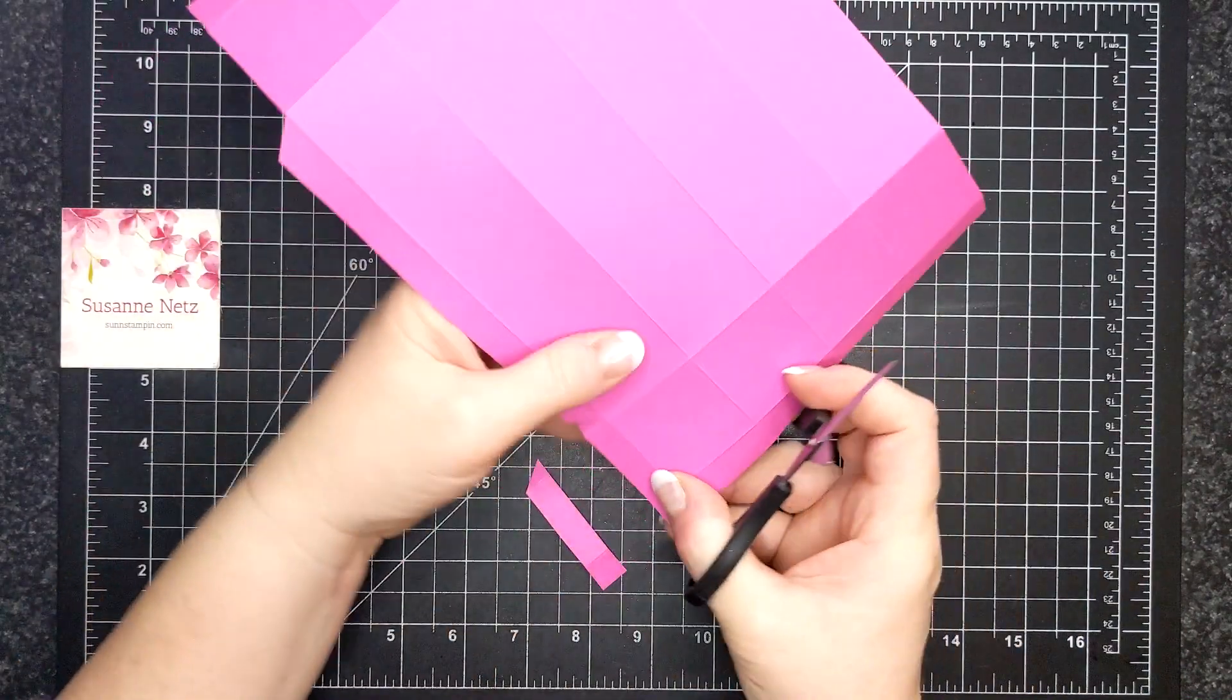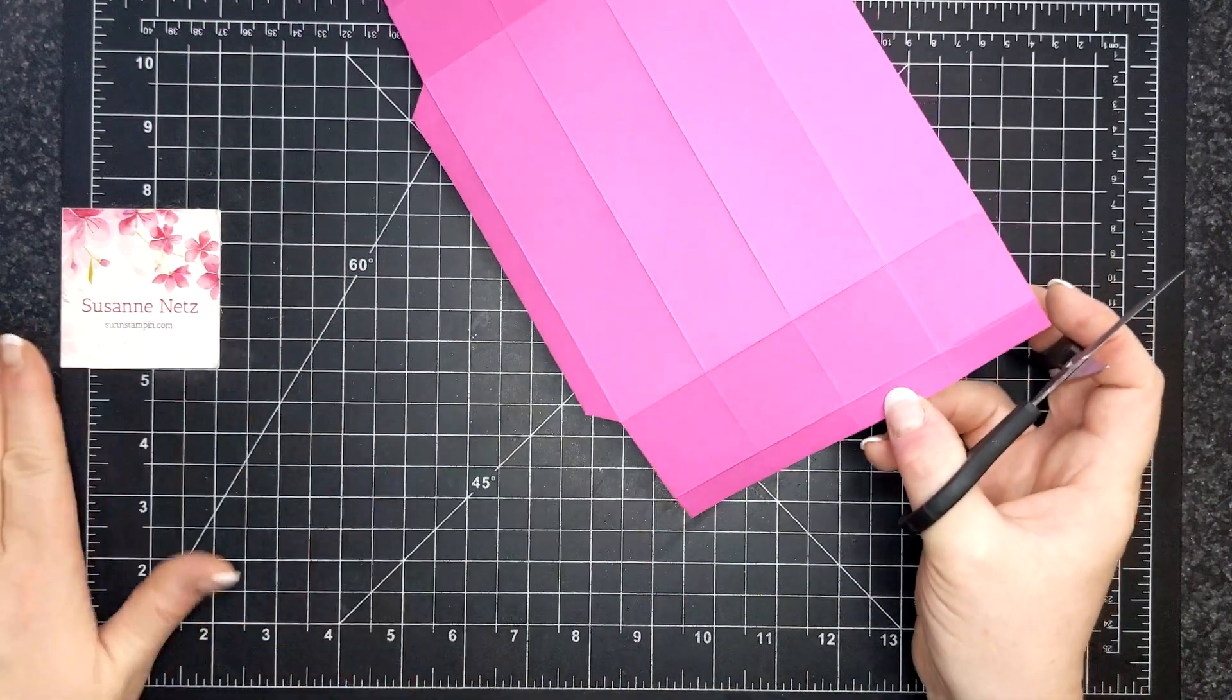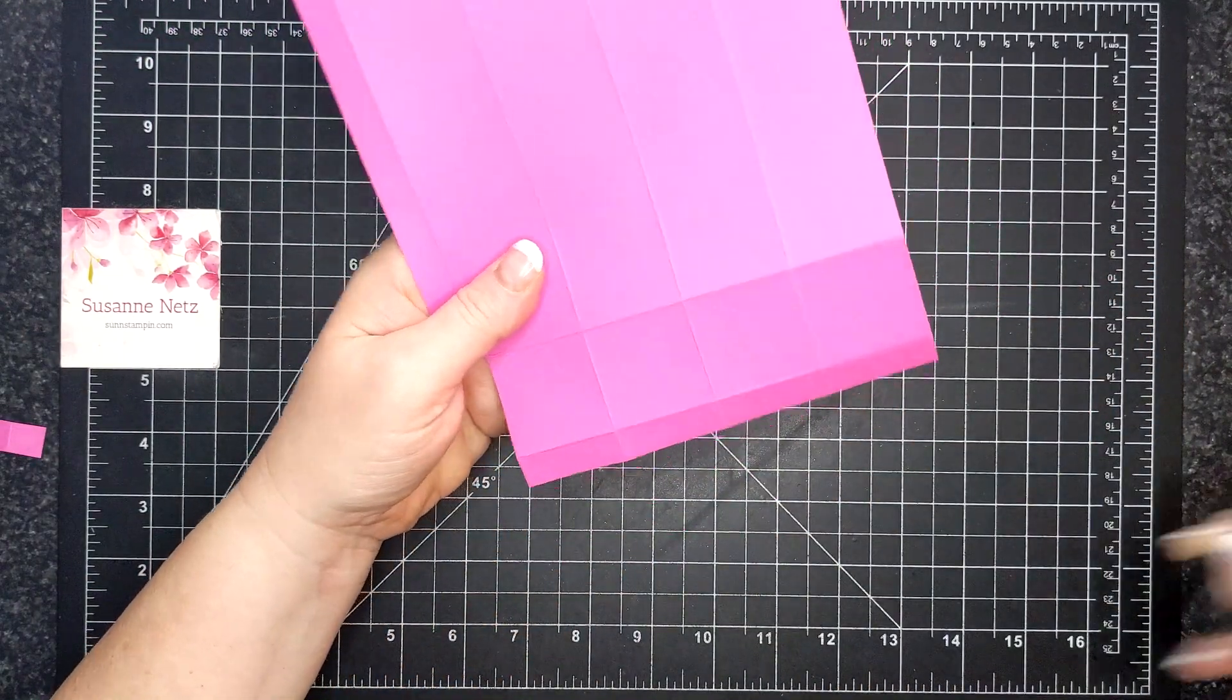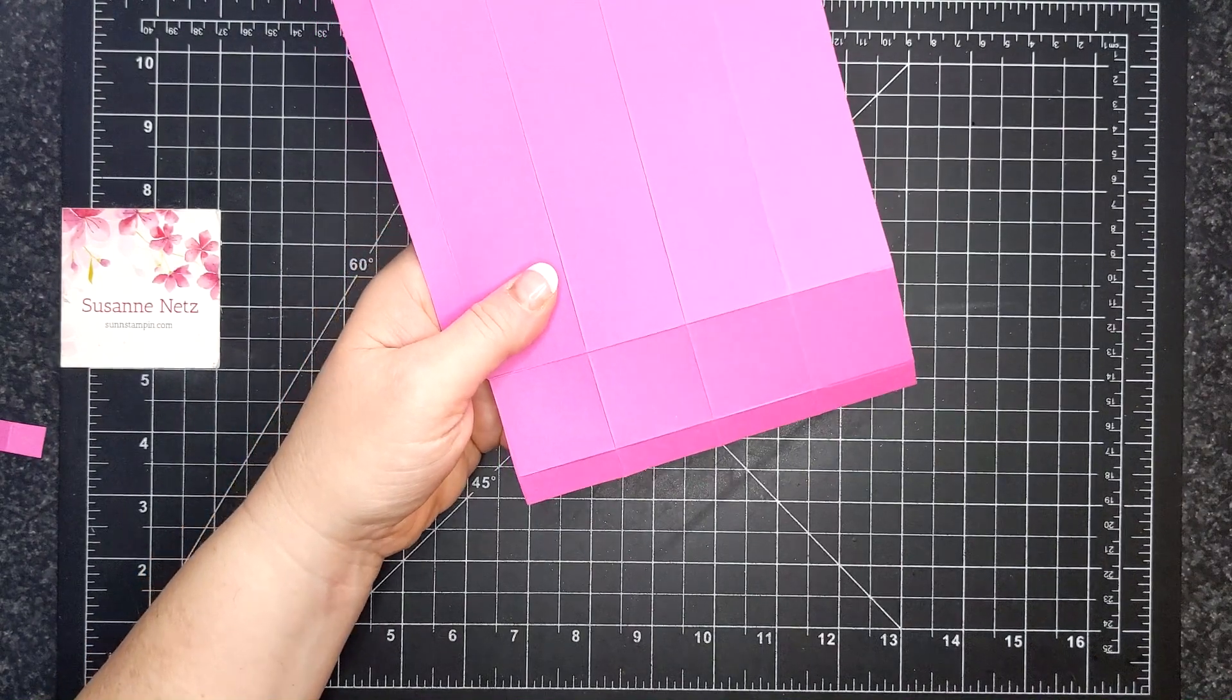On this long side here I'm going to wedge out, I'm going to take off this little square and this rectangle and then angle that. Then I'm going to cut up on the score lines on both sides.